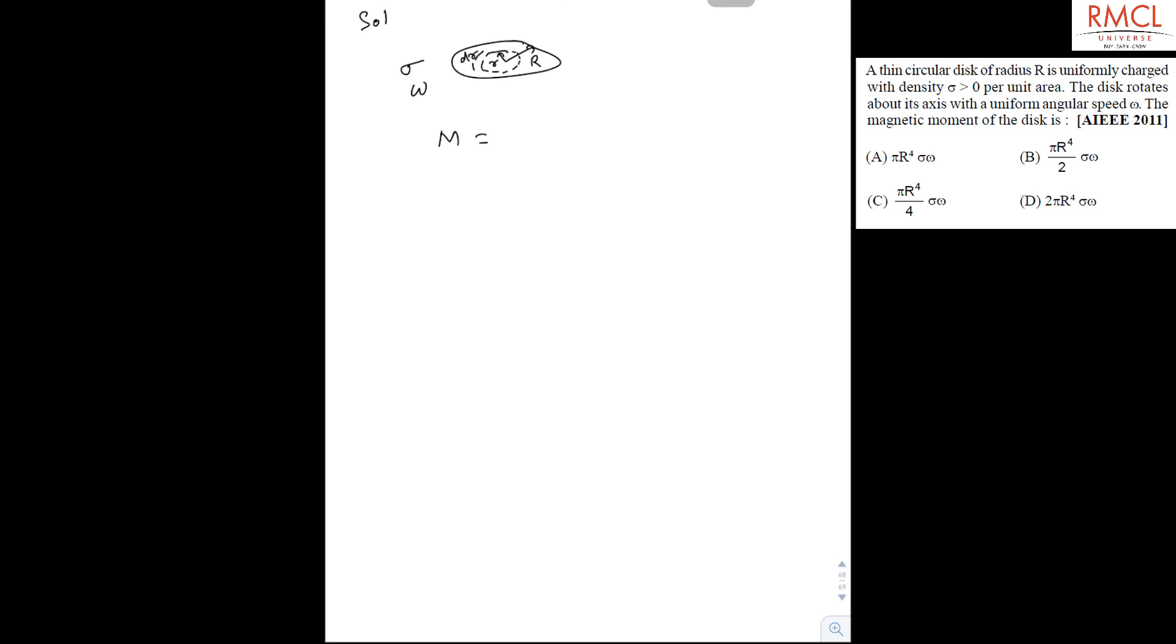We know magnetic moment is I into A, and current is charge upon time period. So it will be q upon time period, which is 2π upon omega, giving q omega upon 2π. The charge dq of this small ring will be sigma times the area of this ring, which is 2πr dr. This is the charge of this small ring.